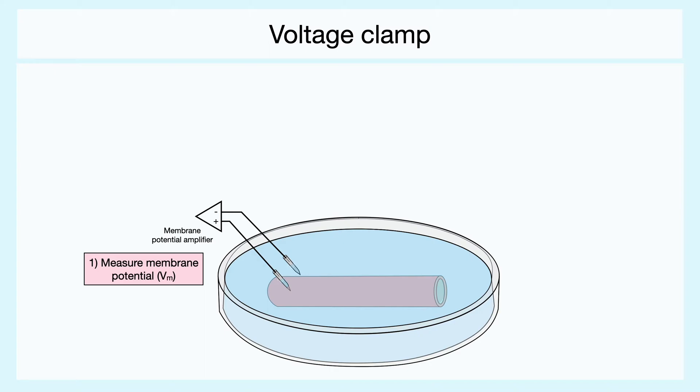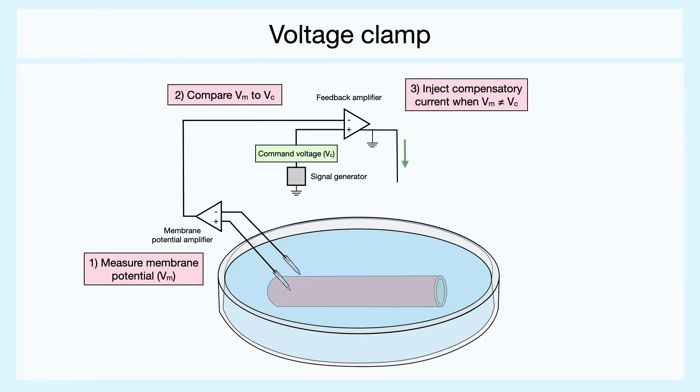The voltage measured in the amplifier is then connected to another amplifier that compares it to a desired voltage. The desired voltage is often referred to as the command voltage and it is generated from a signal generator. This second amplifier then sends a compensatory current to the axon through two electrodes such that the voltage of the axon is always kept at the command potential.